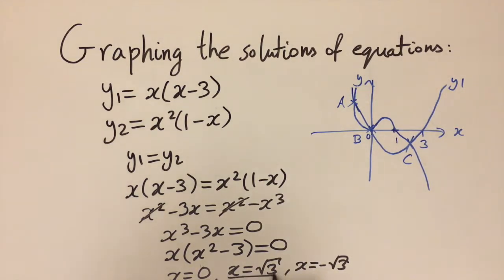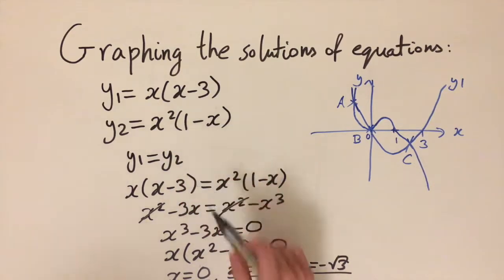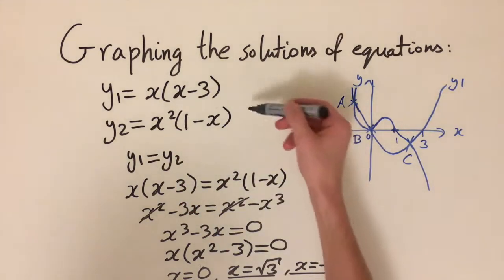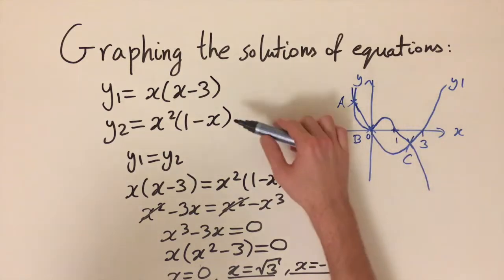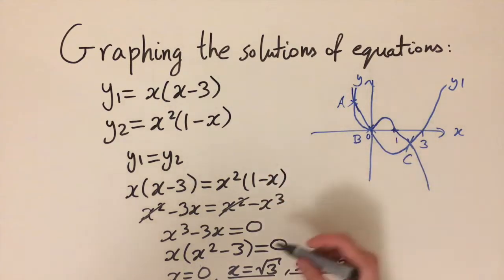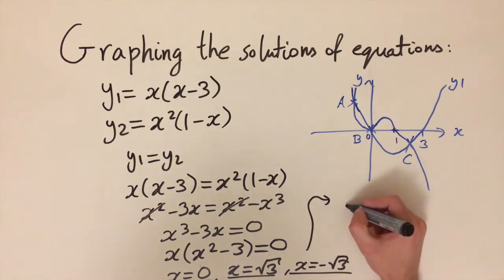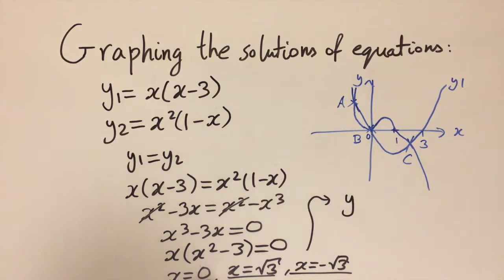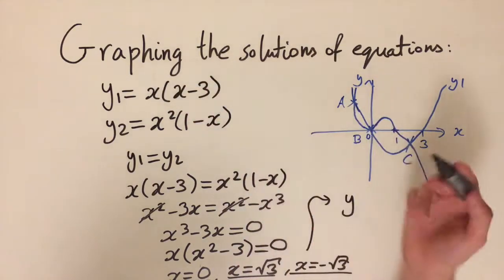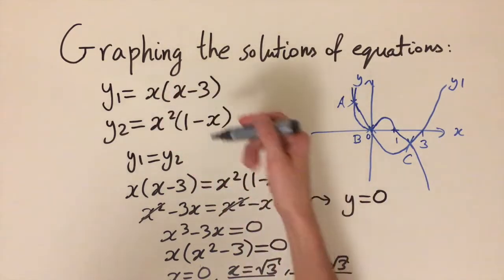We also want to know the y values corresponding to each x value. Since we set y1 equal to y2, they'll be the same from either equation, so we substitute into y1 as it's simpler. Substituting x equals 0 gives y equals 0, since 0 times (0 minus 3) is still 0.